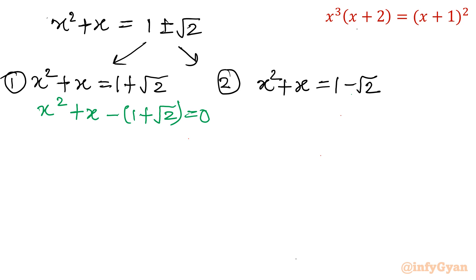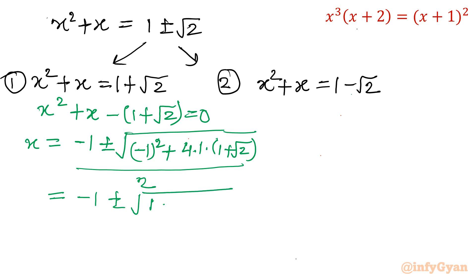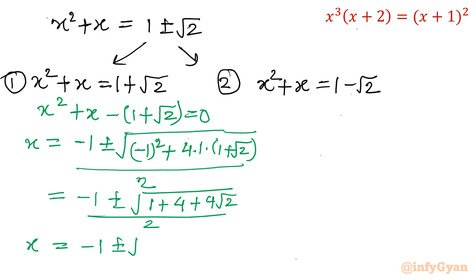Now we only have to solve these two quadratics to get our final answer. For equation 1: x² + x minus (1 + √2) equal to 0. Using the quadratic formula, x equals minus 1 plus minus square root of 1 minus 4 times (negative 1 plus root 2), divided by 2. Expanding: that gives minus 1 plus minus square root of (1 plus 4 plus 4√2) divided by 2. So the two solutions are: x equals minus 1 plus minus square root(5 + 4√2) divided by 2.